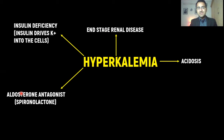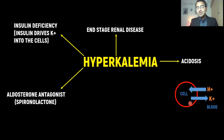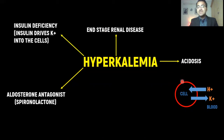Acidosis can also cause hyperkalemia. Whenever the pH of the blood is low and there are excess hydrogen ions, the body tries to normalize the pH by pushing hydrogen ions into the cells in exchange for potassium. So potassium moves out of the cells into the blood, and excess potassium in the blood results in hyperkalemia.